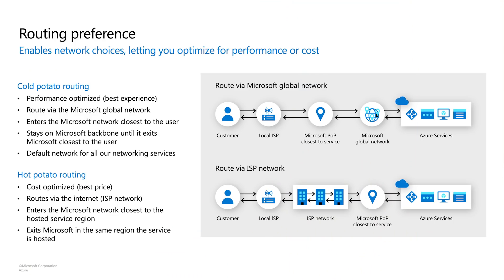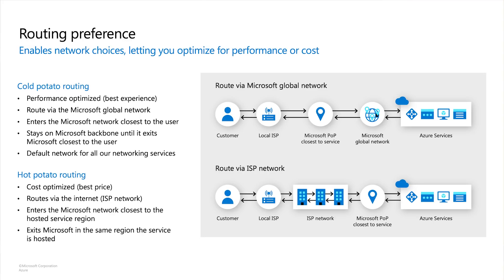Now let's talk about routing preference. Routing preference is a service which provides cost-optimized egress options to users. By default, Microsoft does cold potato routing — traffic from the Azure region to edge sites remains within Microsoft's network and is delivered closest to the user, giving the best performance and reliability. However, for workloads which are not latency sensitive and want to optimize cost, we have a routing preference internet option which uses the internet to deliver traffic to the end user. Traffic exits the Microsoft network closest to the hosted service region. We have two different routing options to deliver traffic from the Microsoft network.